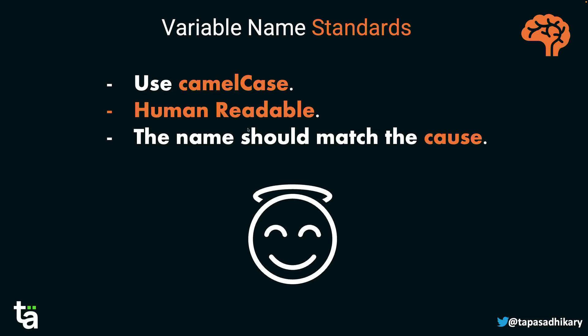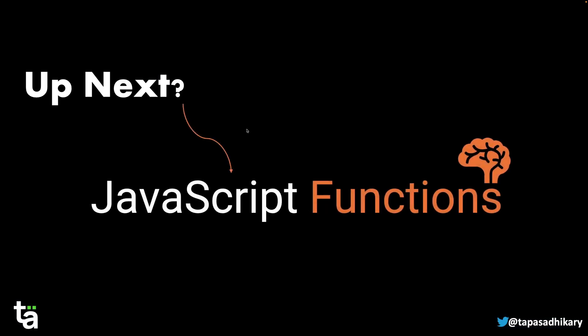With that, this topic ends. We learned a lot about variables. Up next we are going to learn about JavaScript functions — what they are, why they're called first-class citizens in JavaScript, how to use them. After that we'll get into concepts like the call stack, hoisting, scope, scope chain, and closures. I hope today's video was useful — please practice a lot with the mental model we're building. See you soon with the JavaScript functions video!